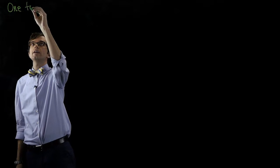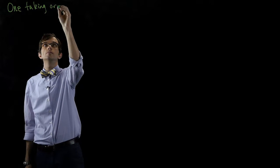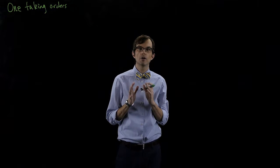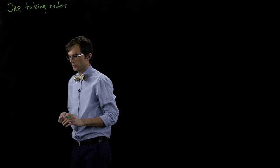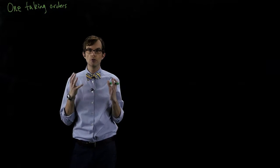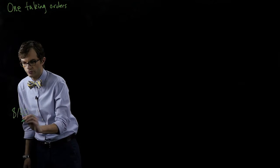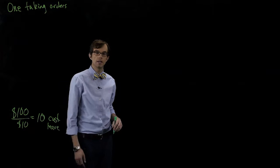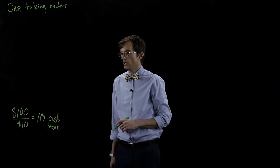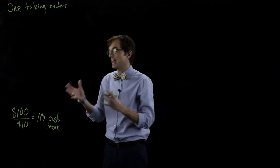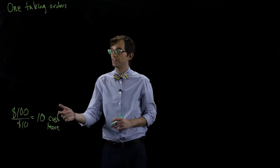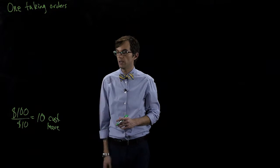Let's think about one employee taking orders first. We want to find the probability that we lose one hundred or more in revenue in two hours. For every customer that balks, we lose ten dollars in revenue. So to lose a hundred dollars we would need ten customers to leave. If we're finding the probability that we lose more than one hundred dollars in a two-hour period, that means more than ten customers would have to balk in that two-hour time period.